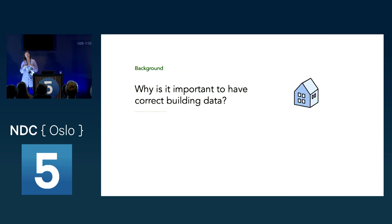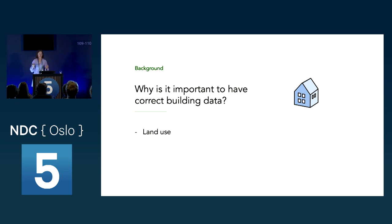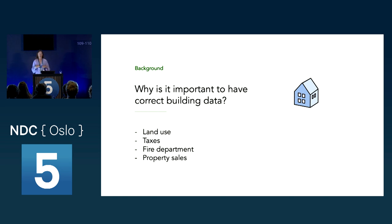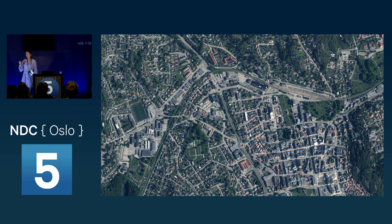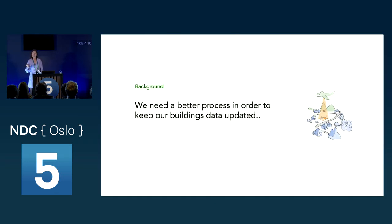Why is it important to have correct building data? First, due to land use — we need to know how much of our land we're building on, which matters for flood considerations. It's also important for taxes: many Norwegian municipalities have property taxes that won't be correct unless the building data is accurate. It's important for the fire department in emergencies, and we want this data correct when buying or selling property.